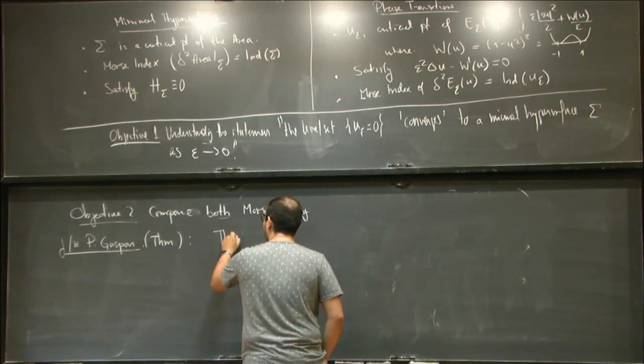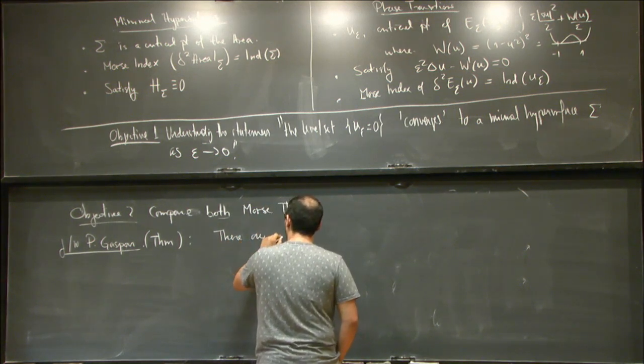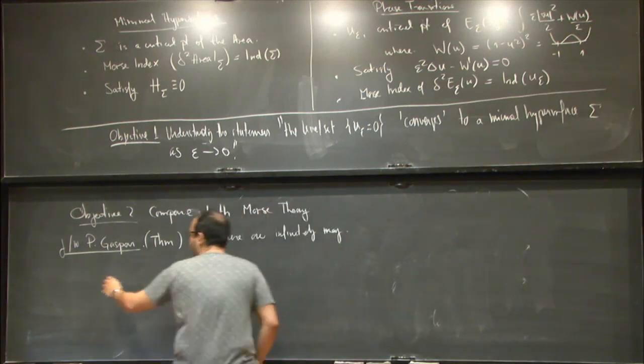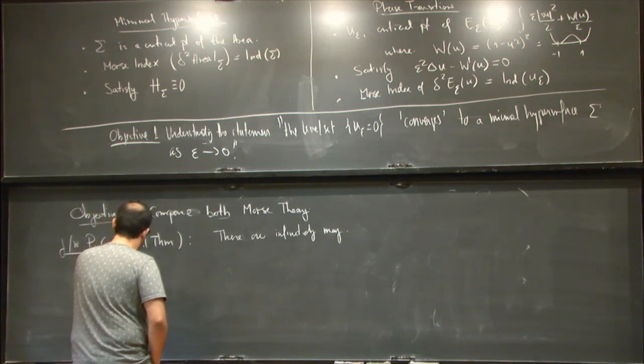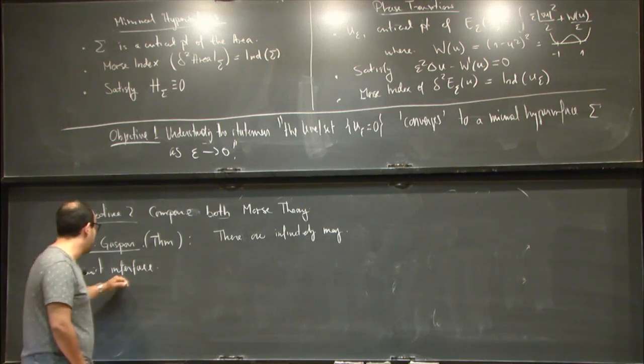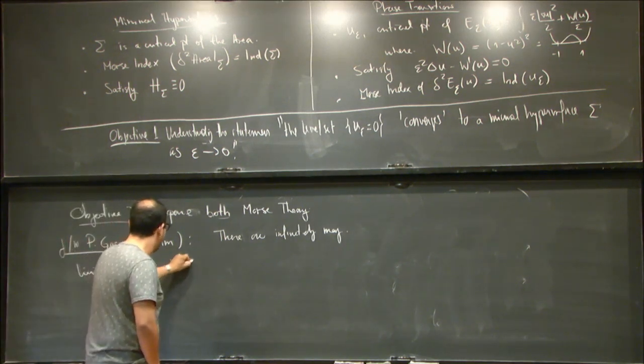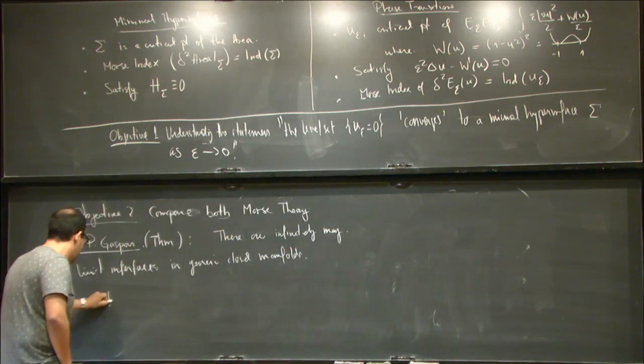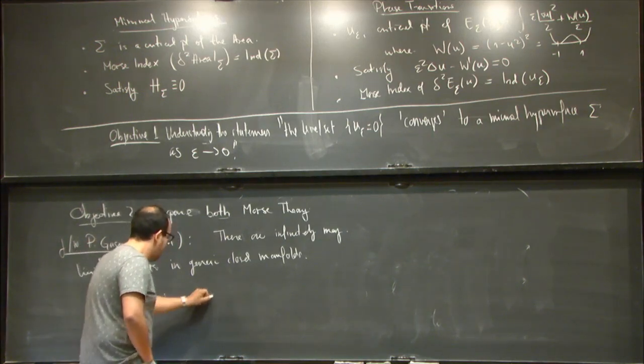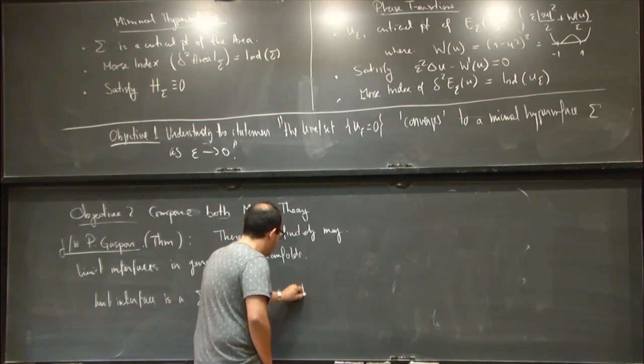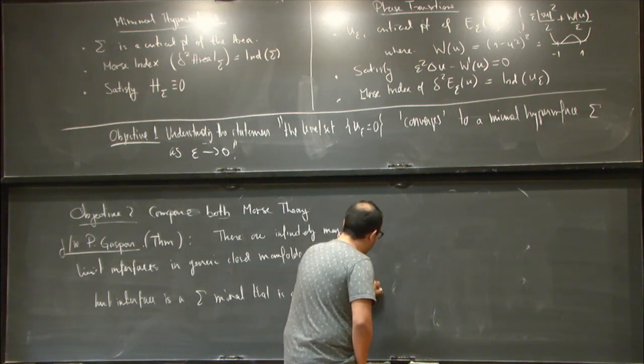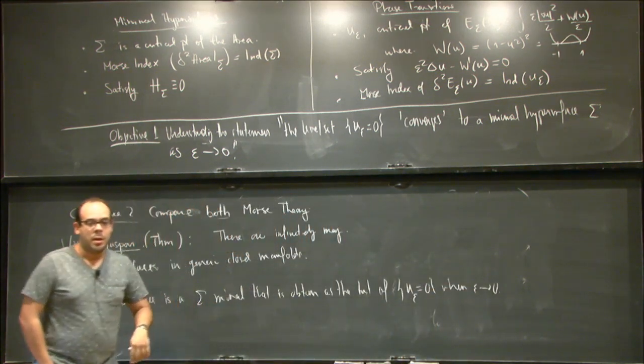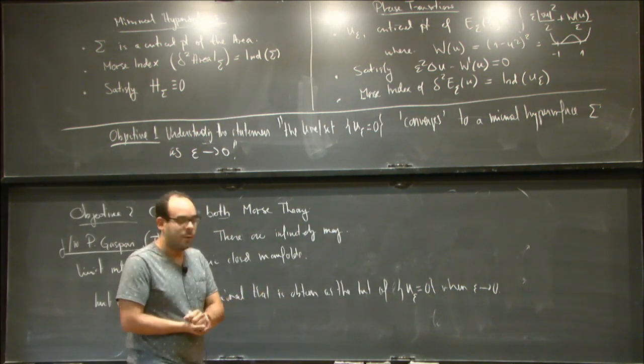And in this case, the theorem that I'm choosing to present is the following. So there are infinitely many limit interfaces in generic closed manifolds, and by this I mean the following, so limit interface is a sigma minimal that is obtained as the limit of the level set u equal to zero when epsilon goes to zero, and by generically, we mean there's a meager set that we're not considering of metrics on a fixed manifold.